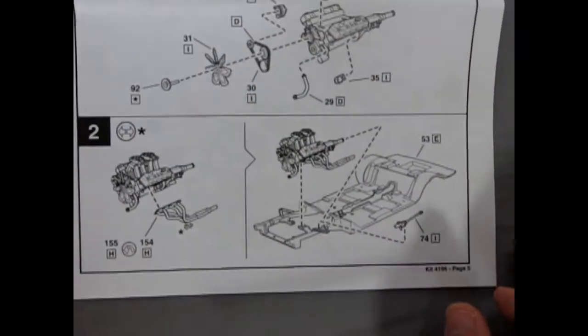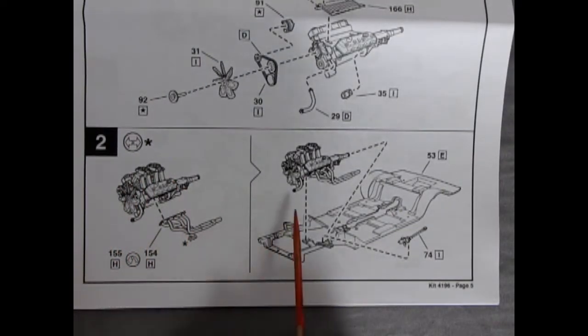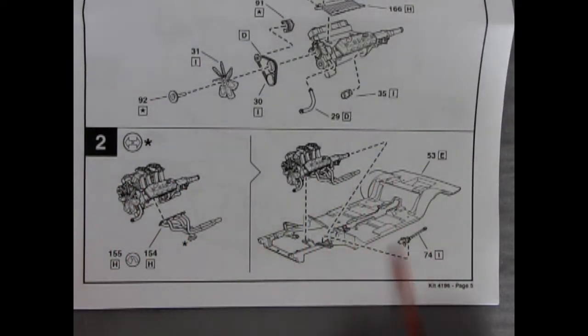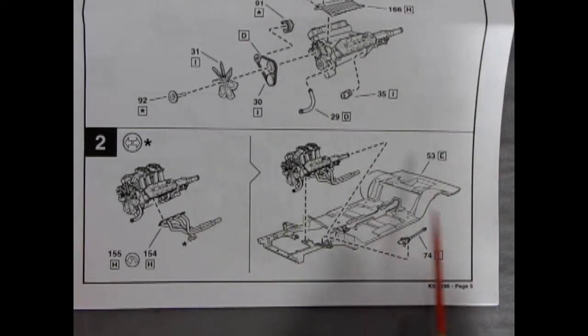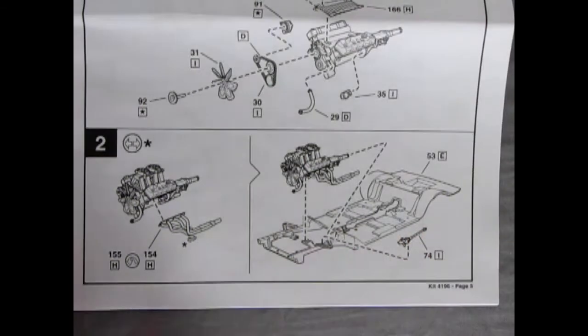And then in panel two here we have our engine getting the headers put on and then dropping into our floor pan here. This is of course a unibody construction, and then we also have a steering box and linkage going up there.